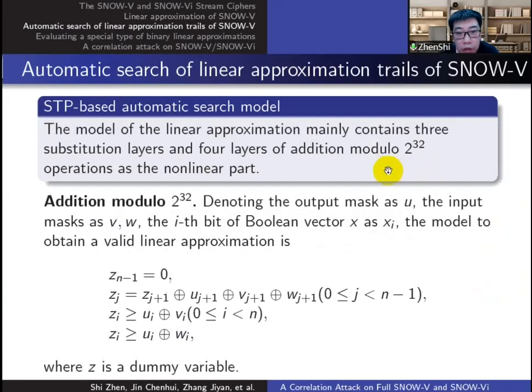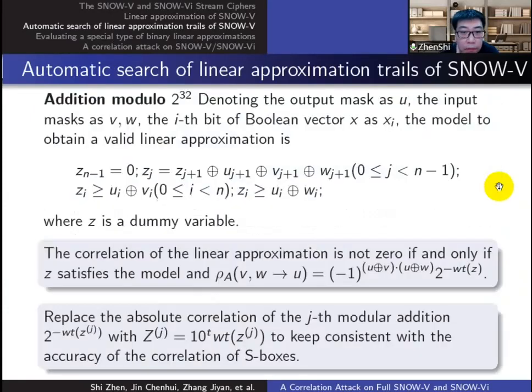The modular addition and S-box. For the modular addition, the characterization based on both SAT and MILP have been given. We can characterize it in this way: z is the dummy variable, t is the parameter used to keep the modular addition the same precision as S-boxes.